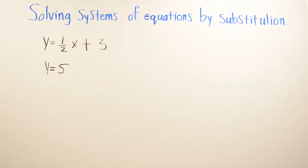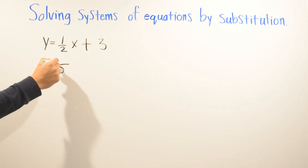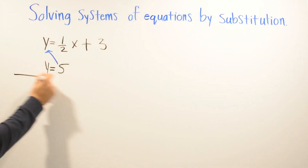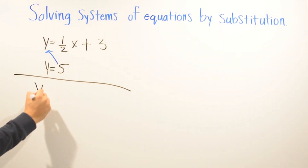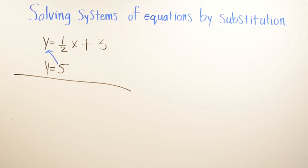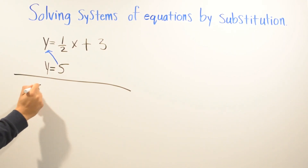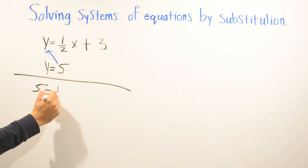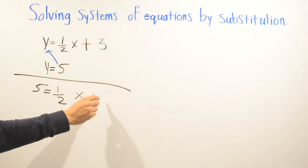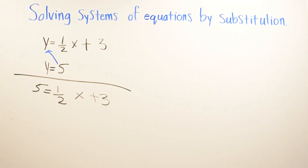Since one variable is already solved, all we have to do is substitute. So everywhere you see a y, we're just going to substitute with five. We're going to put five equals one half x plus three.